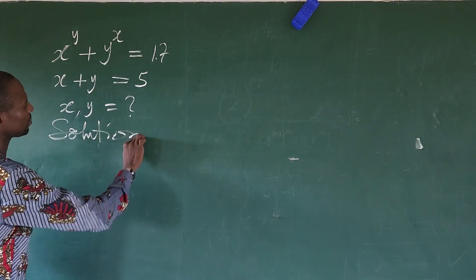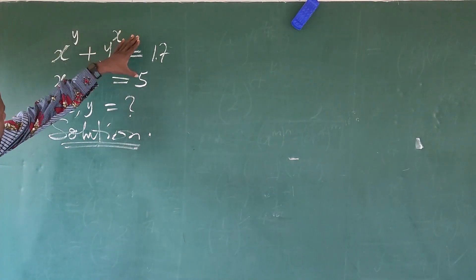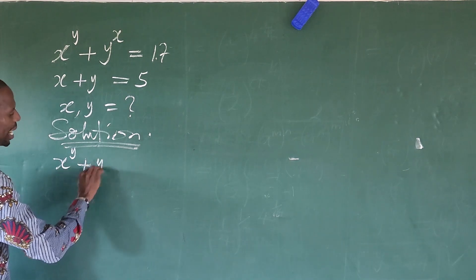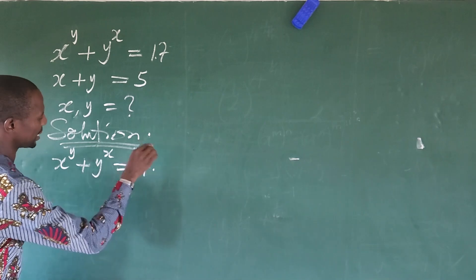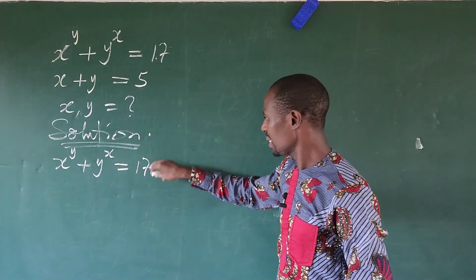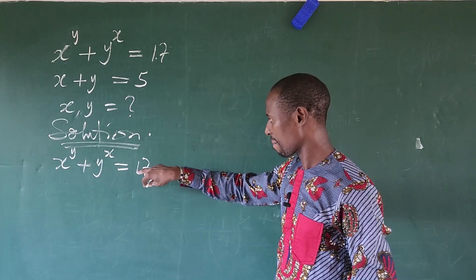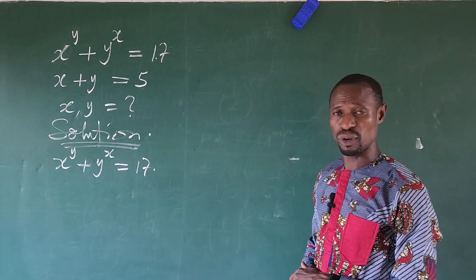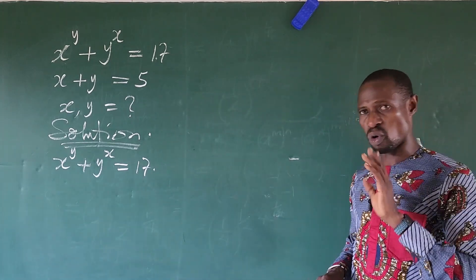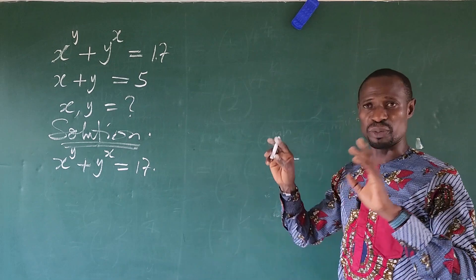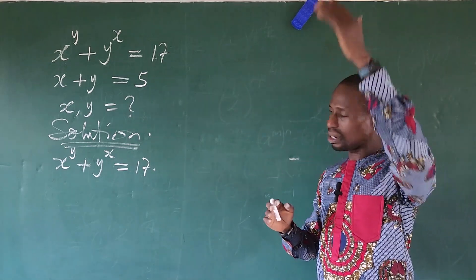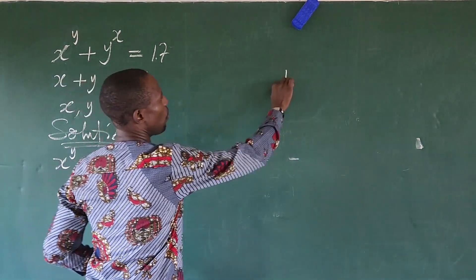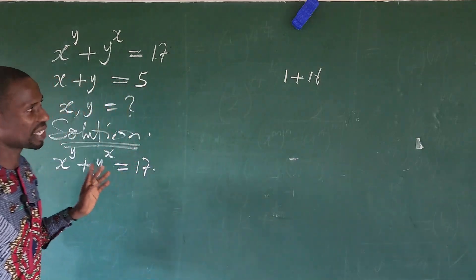We have selection. Let's take our first equation. We have here x to the power of y plus y to the power of x equal to 17. We think of rewriting this number 17. Thinking of rewriting number 17, what we put into consideration is that whatever we are going to come out with, there should be numbers that we can raise to each other that their sum will give us this. Remember, 17 can be written as 1 plus 16.